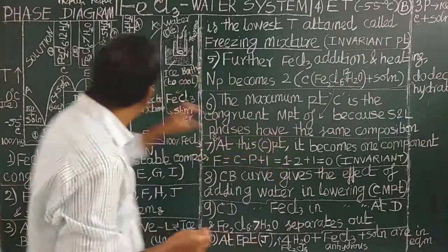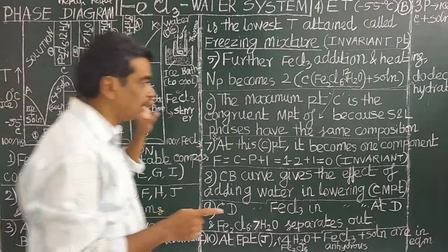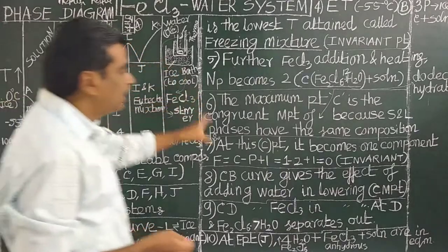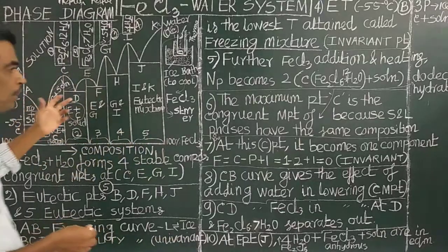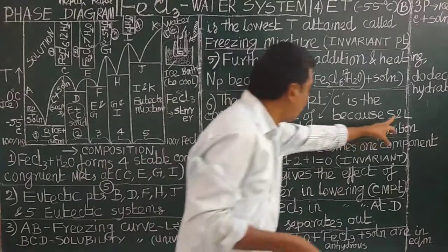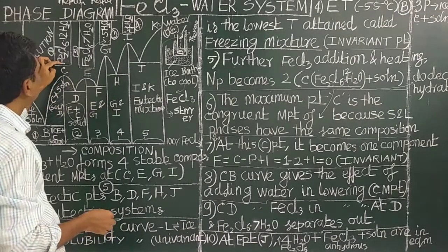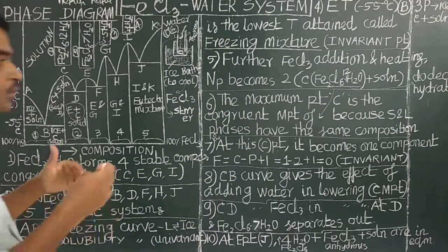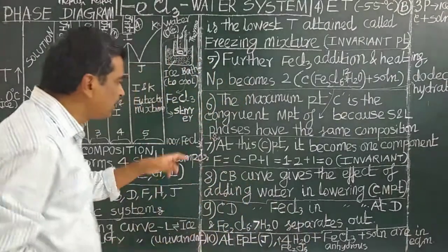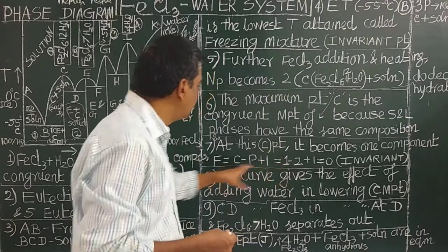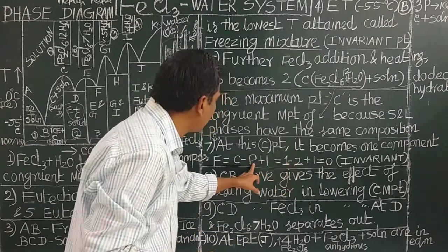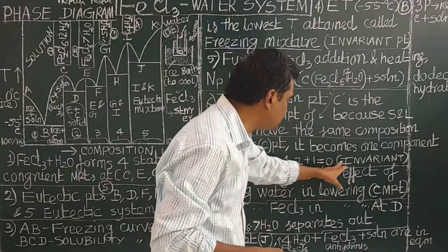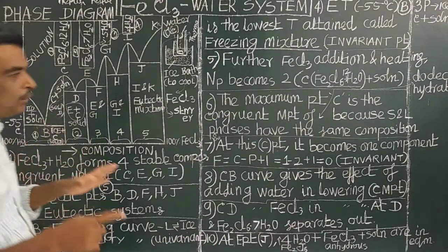At this point, the system becomes effectively one component. It is a two-component system overall, but at points C, E, G, and I it behaves as one component, because the solid and liquid phases have the same composition — a congruent melting point. Applying the reduced phase rule: F = C − P + 1 = 1 − 2 + 1 = 0, so it is an invariant point, similar to an eutectic point.